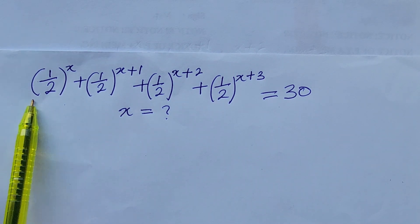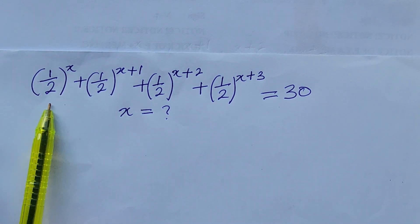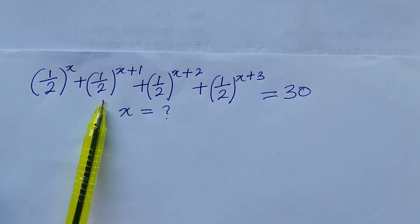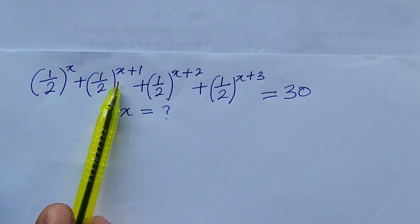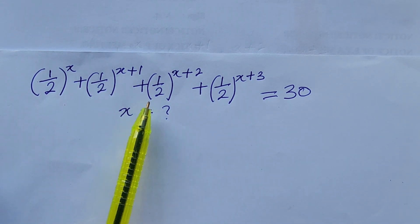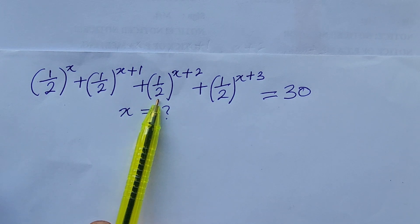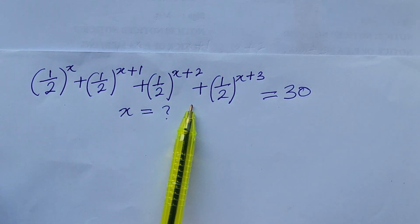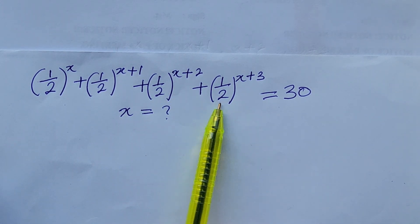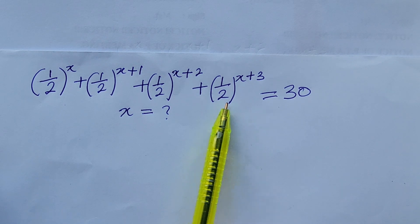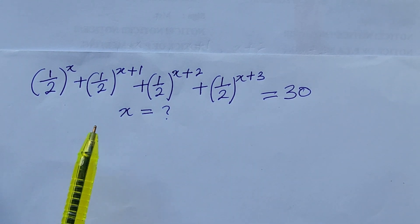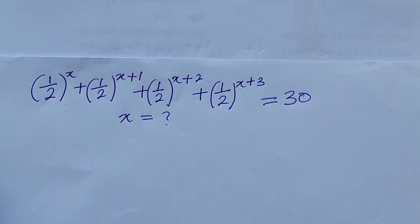The question is: (1/2)^x + (1/2)^(x+1) + (1/2)^(x+2) + (1/2)^(x+3) = 30. What will be the possible value of x?